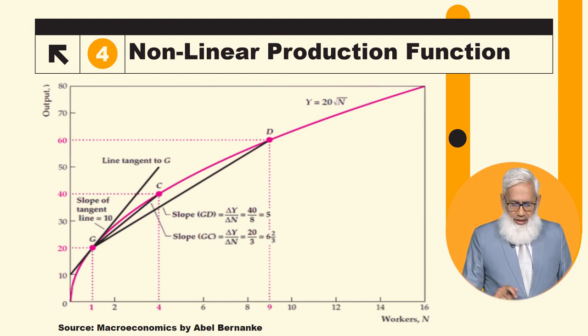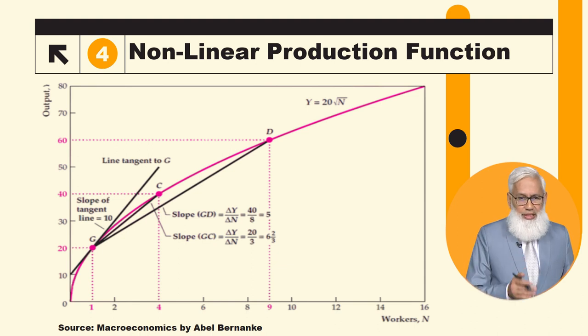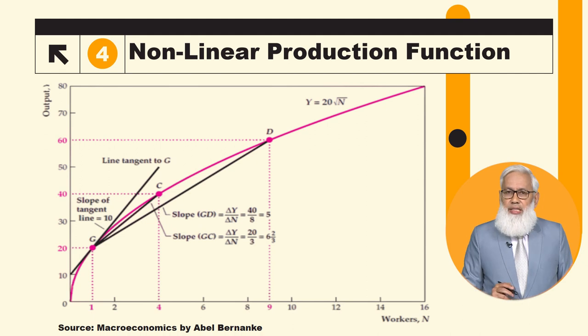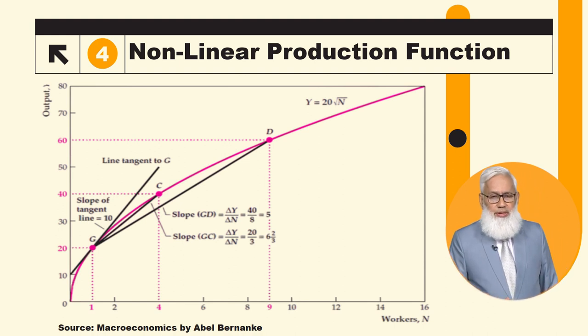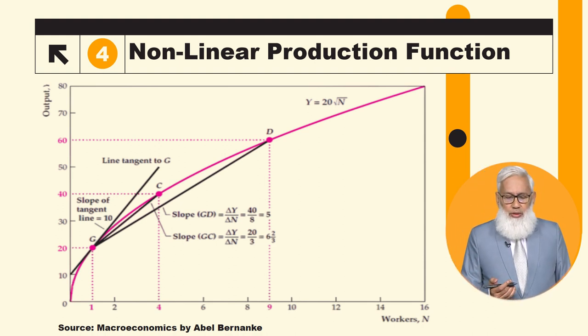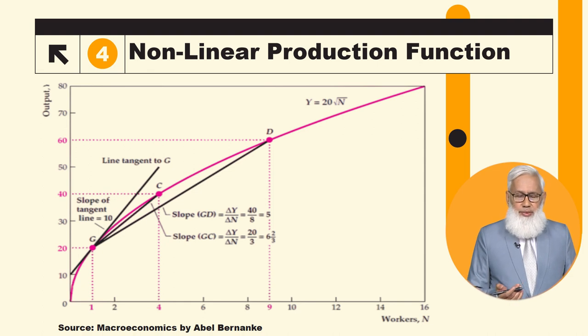So first of all you can see, again we have on the horizontal axis we are taking number of workers. Vertical axis hum output lere hai. Aur yeh joh red, it is non-linear production function. So the graph is non-linear. So yeh batara hai kya relationship hai between number of workers and output.